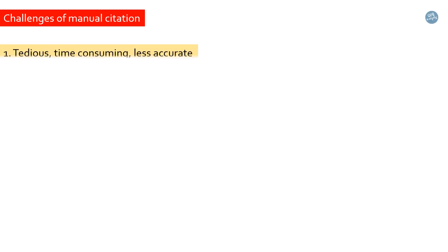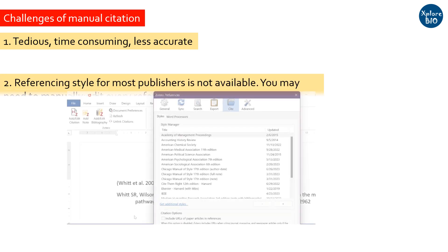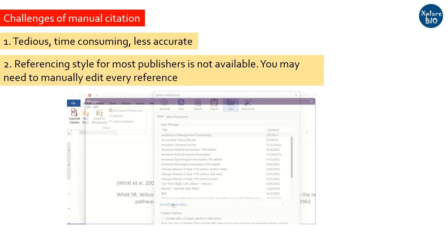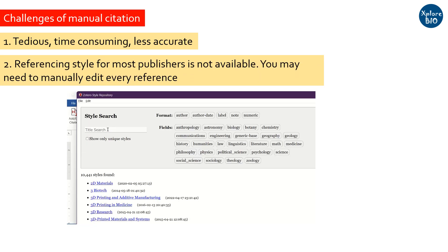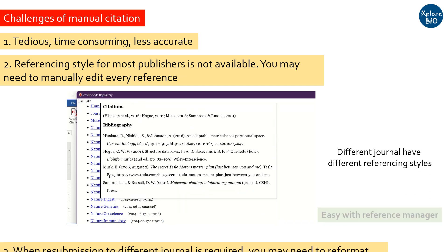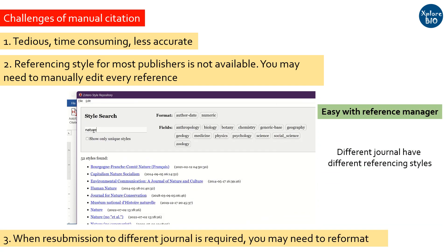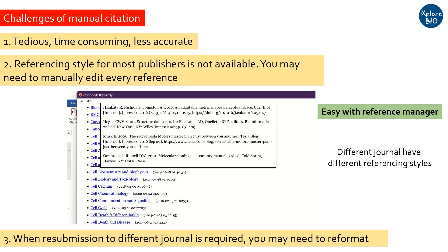However, this way of manually citing and adding references is tedious, time-consuming, and less accurate. Plus, you may not find many of the styles a publisher asks when you submit your research article. Also, when you plan to resubmit your paper to a different journal, its citation style may change, and manually doing it is very very difficult.